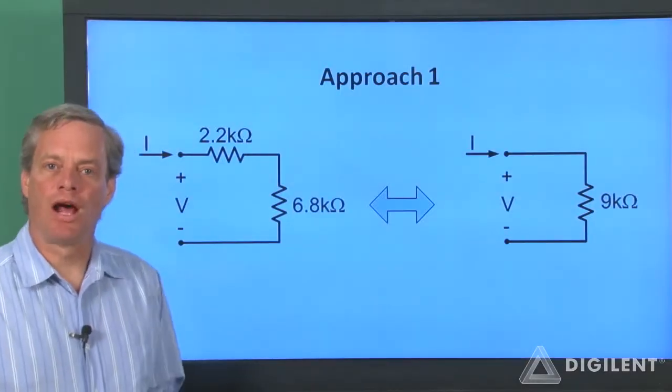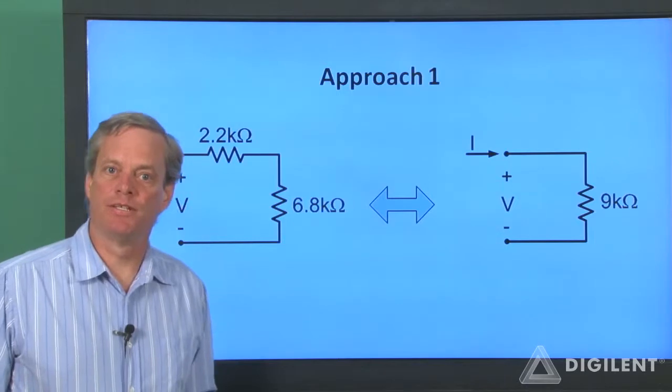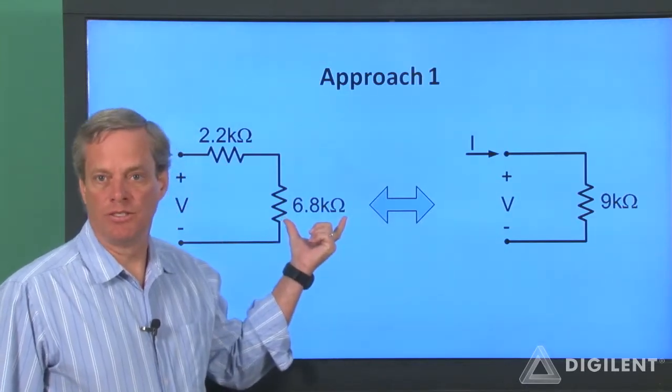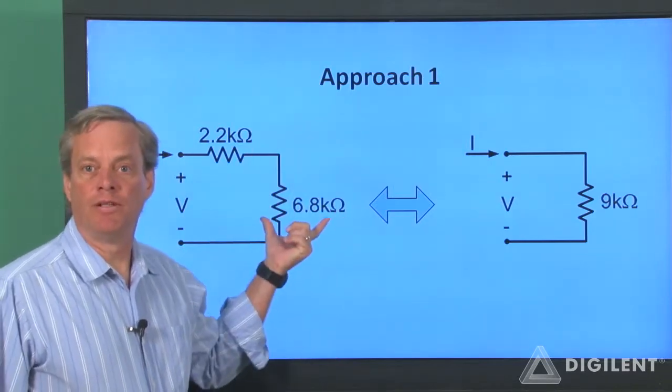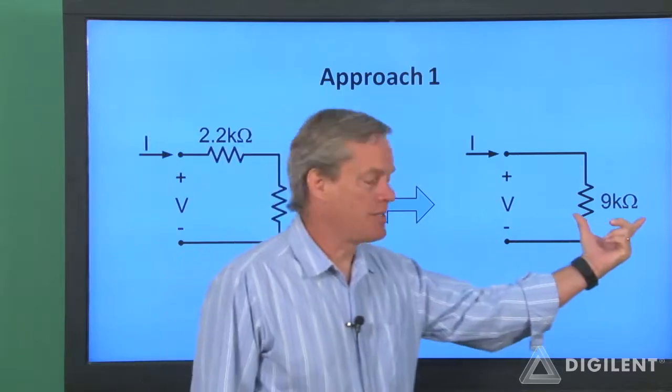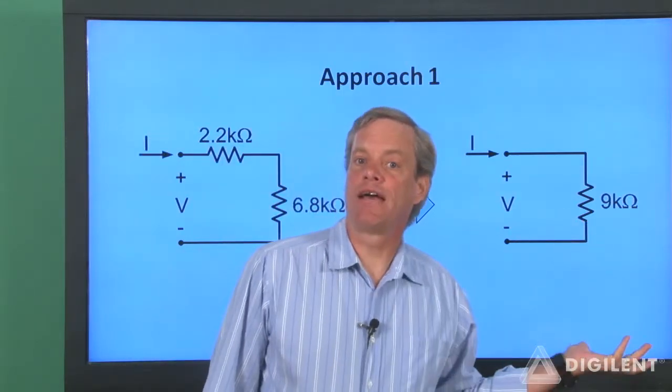The first approach I'll try to create my desired resistance is to use a 2.2 kiloohm resistor in series with a 6.8 kiloohm resistor. Both of these are available in the parts kit. If we add these resistances, we get an equivalent resistance of 9 kiloohms, which is exactly what we want.